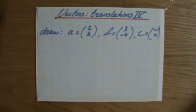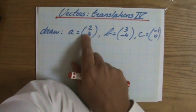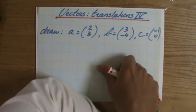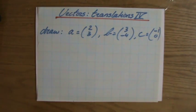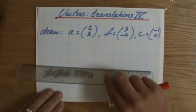So maybe you want to try that yourself first. Vector A is (2, 3), vector B is (3, -4), and C is (-1, 0). Okay, so try it yourself before you look at my solution.